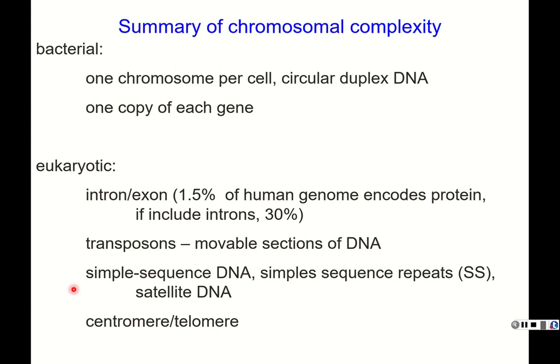Bacterial DNA is organized into one chromosome per cell. It's circular DNA and it's duplex, meaning it's double-stranded, and you have one copy of each gene. Some organisms actually have multiple copies of each gene, as in eukaryotic cells.